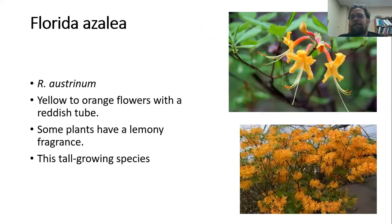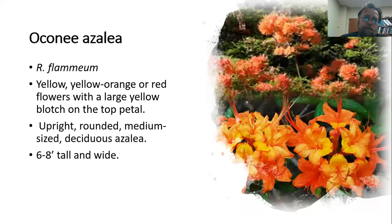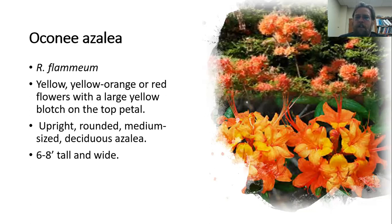Getting into a couple of my real favorites — this is the Florida azalea, Rhododendron austrinum. Really brilliant yellow and orange flowers with a nice reddish tube that gives good contrast. I really like the lemony fragrance. They're quite a tall-growing species and can really show off a fantastic amount of color. Another real favorite — you can see I like the oranges — is the Oconee azalea, Rhododendron flammeum. Really nice yellow and yellow-orange-red flowers, many with a yellow blotch on the top petal, with good upright growth about six to eight feet tall and wide.